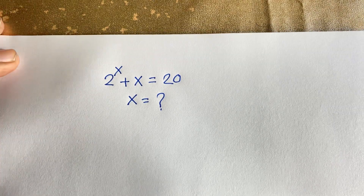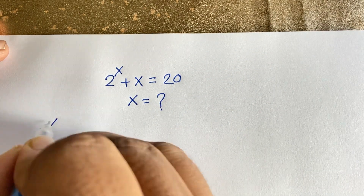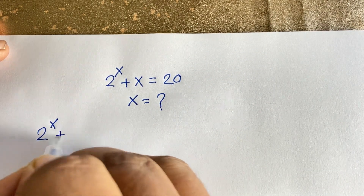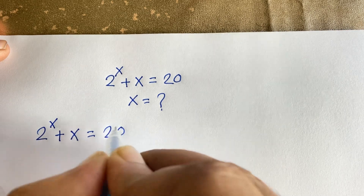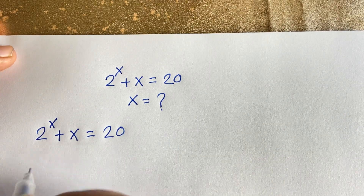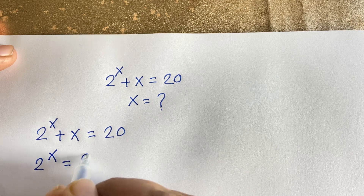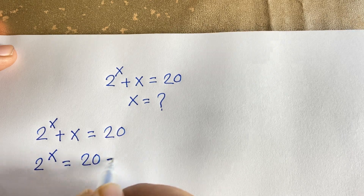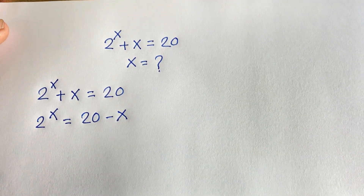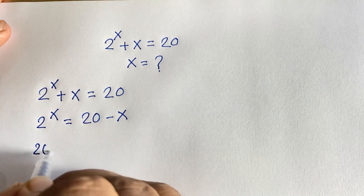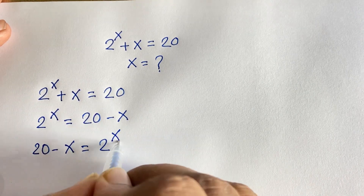Our equation is 2 to the power x plus x is equal to 20. This equation becomes 2 to the power x is equal to 20 minus x. I just move x to this side, so 20 minus x is equal to 2 to the power x.